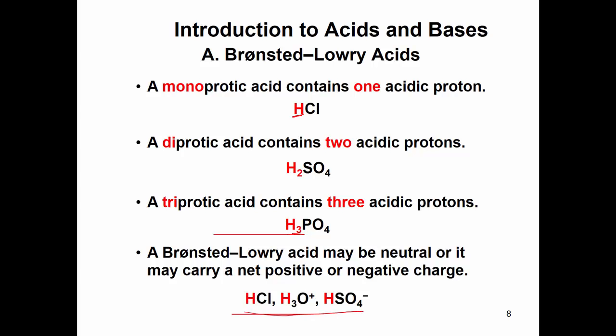And notice, acids can be neutral, like HCl. Positive, like hydronium, H3O+. That really right here, that is the definition that we've seen sort of of an acid. It's H-plus concentration or hydronium concentration. And even here, we still have a proton, even though this is negative. So this can also be an acid. So acids can be neutral, positive, or negative.